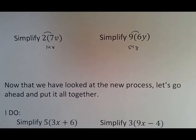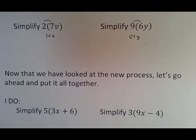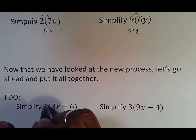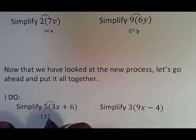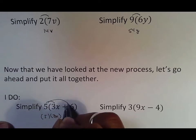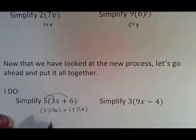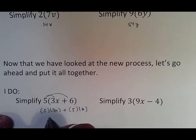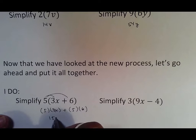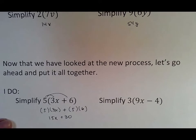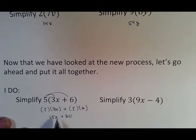Real quick: you have 3x as a term, 6 as a term, and 5 on the outside. We say that 5 meets 3x and 5 meets 6. Five times 3x—we multiply 5 by 3, which is 15, and bring down the x. Five times 6 is 30, and there's your answer. Remember, we do not put these two together because one has an x and the other doesn't.